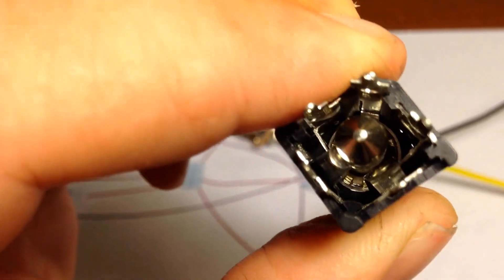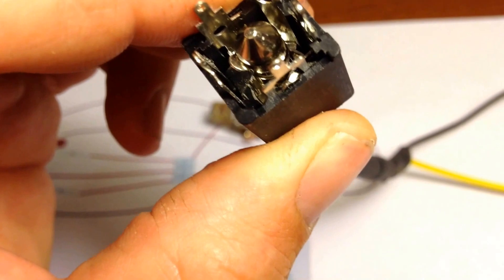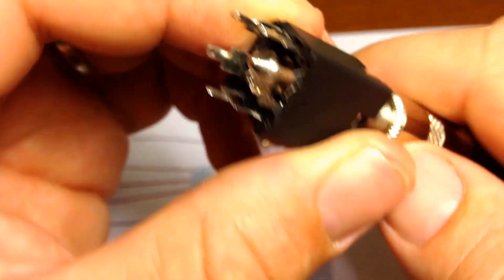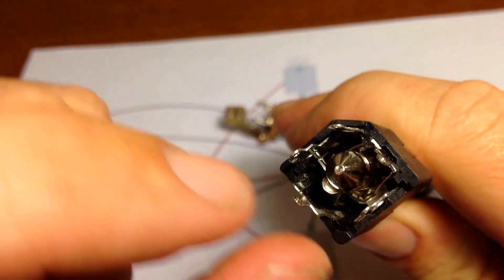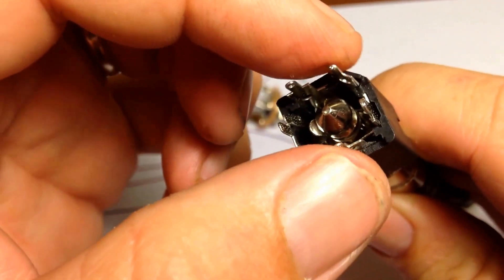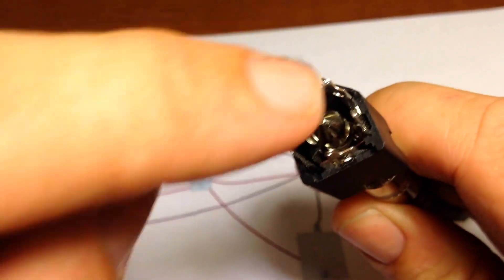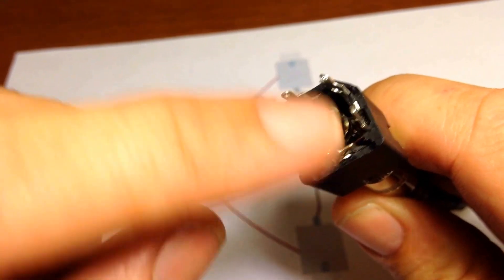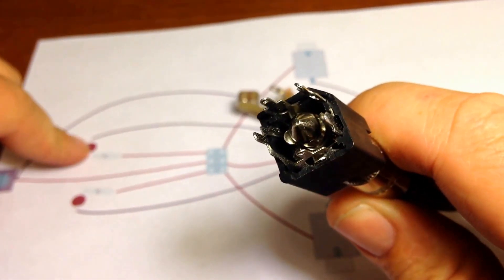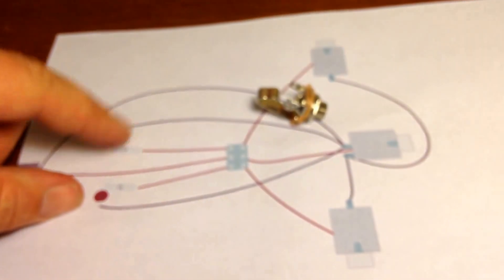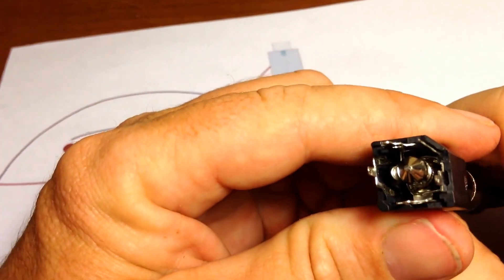But when you put this quarter inch plug in here, what happens is, I don't know if you can see in there real well, but that little bump that I showed you a second ago is making contact with these two. So it's acting like basically a wire jumping across and that allows the flow of electricity on, and that's what allows your LED to come on.